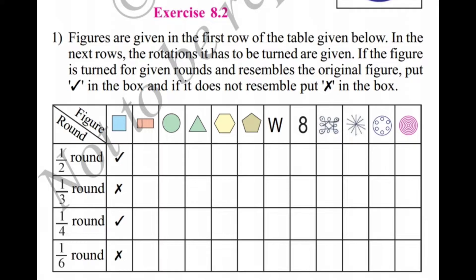These figures are given in the first row of the table below. In the next rows, the rotations it has to be turned are given. If the figure is turned for the given rounds and resembles the original figure, put a right mark in the box. If it does not resemble, put a wrong mark in the box. The first one is done for you as an example.